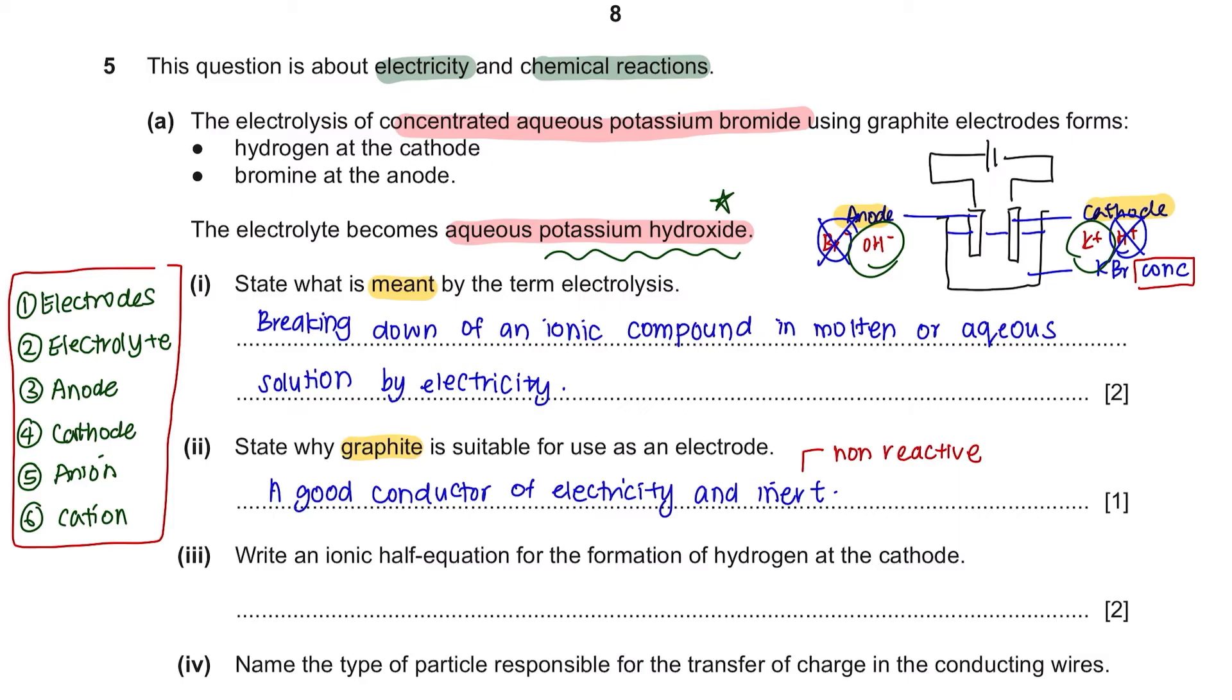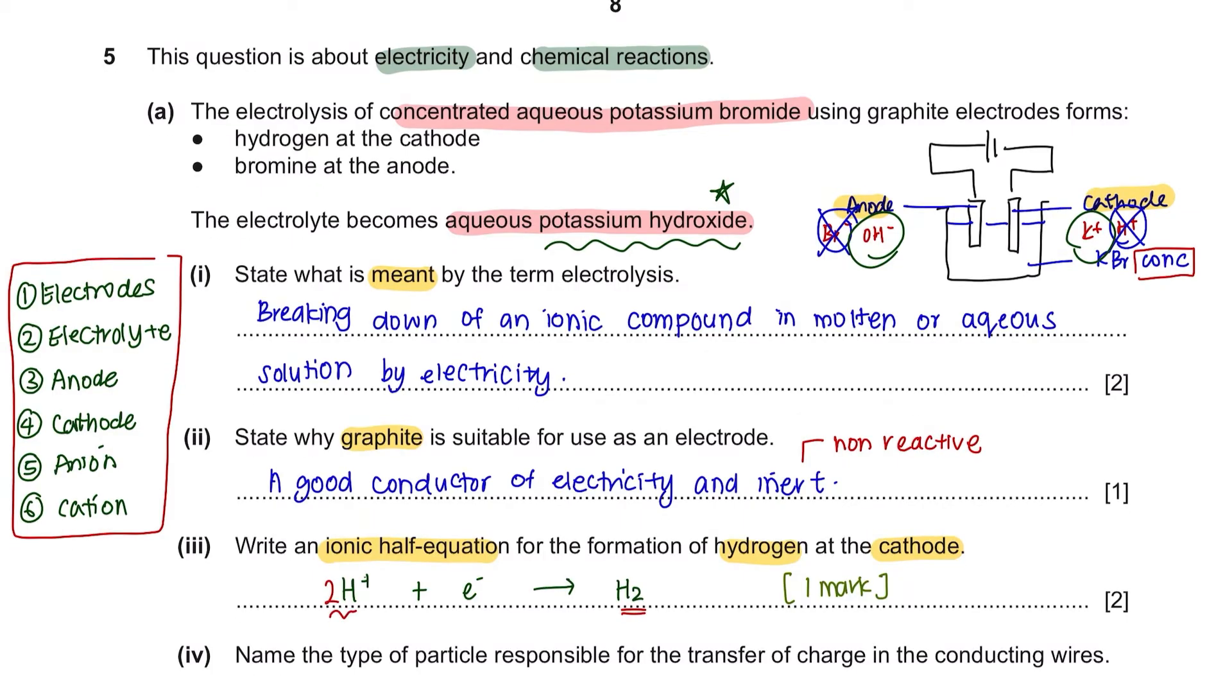Part 3. Write an ionic half equation for the formation of hydrogen at cathode. Hydrogen ions are discharged at the cathode, which gains electrons and are reduced to form hydrogen gas, giving you one mark. When writing any equation, always check whether or not the equation is balanced. Since you have 2H here, you also have to balance the H here with 2. This causes your charge to become 2+, therefore you have to balance it with 2 negative. This will give you your second mark.